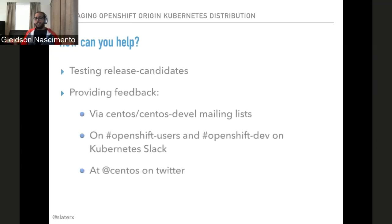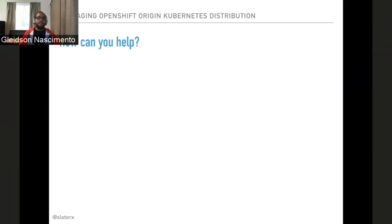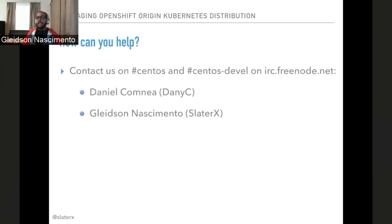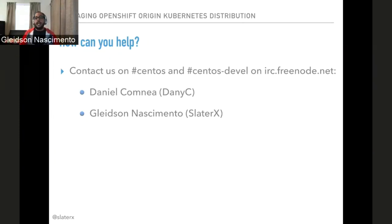This is a very complex yet straightforward process, and we rely on the help from the community. You can help us test release candidates and provide feedback through one of our official channels. You can also hang out on IRC for commenting and providing more detailed feedback. The current members today are Daniel and myself, and we can also be found on Slack or the Kubernetes Slack.